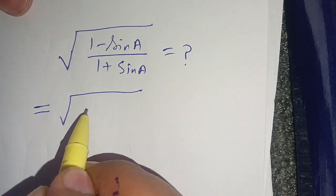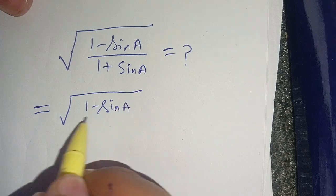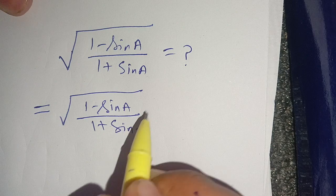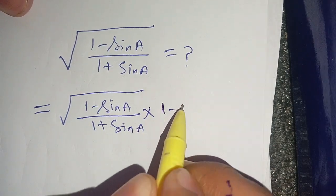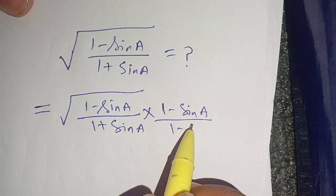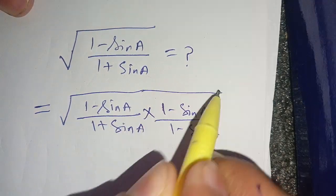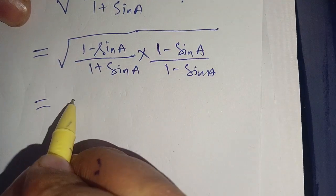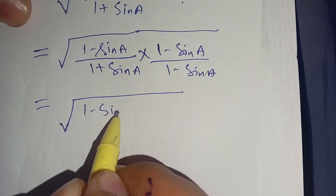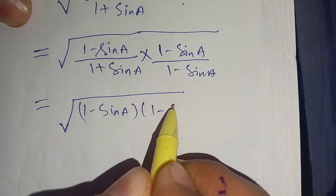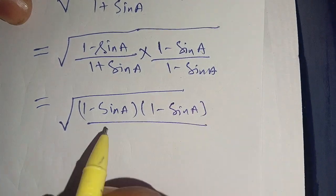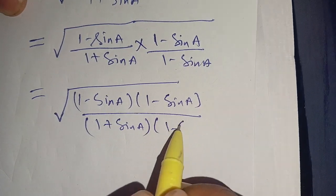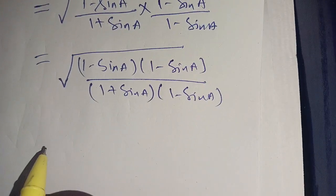We can write it as the square root of (1 minus sine of a) divided by (1 plus sine of a). To rationalize the denominator, we multiply by (1 minus sine of a) divided by (1 minus sine of a). In the next step we can write it as the square root of (1 minus sine of a) times (1 minus sine of a), divided by (1 plus sine of a) times (1 minus sine of a).